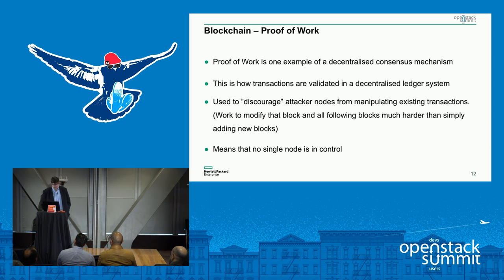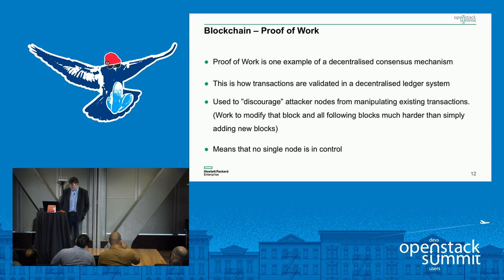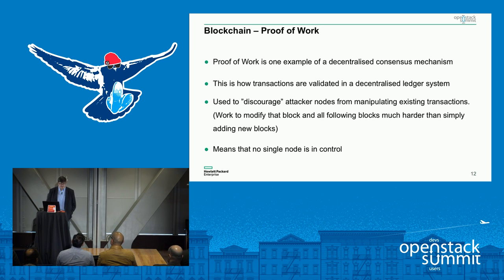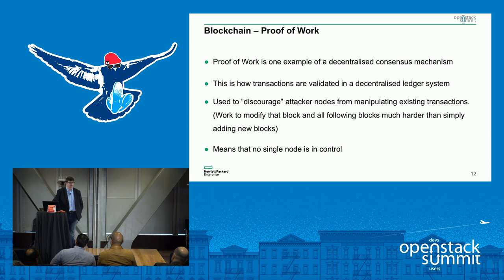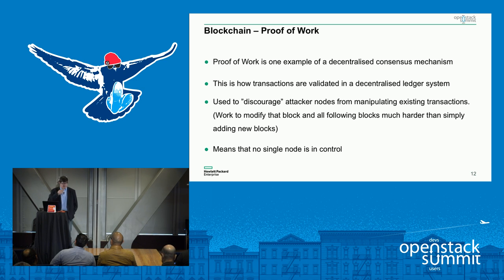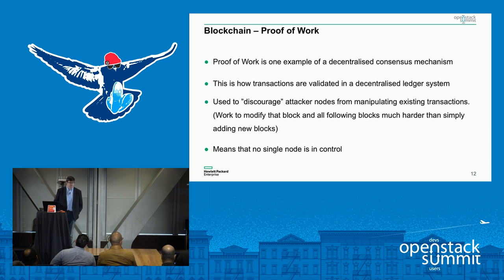Proof of work is an example of what they call a decentralized consensus mechanism. It validates via a calculation that transactions have been successful. It's also used to discourage attacker nodes, because they'd have to do a huge amount of work to compromise the integrity of everything beyond it — one node would have to do the work of the sum of all other nodes plus more over the time period. It also means no single node is in control; no one has the only right story.